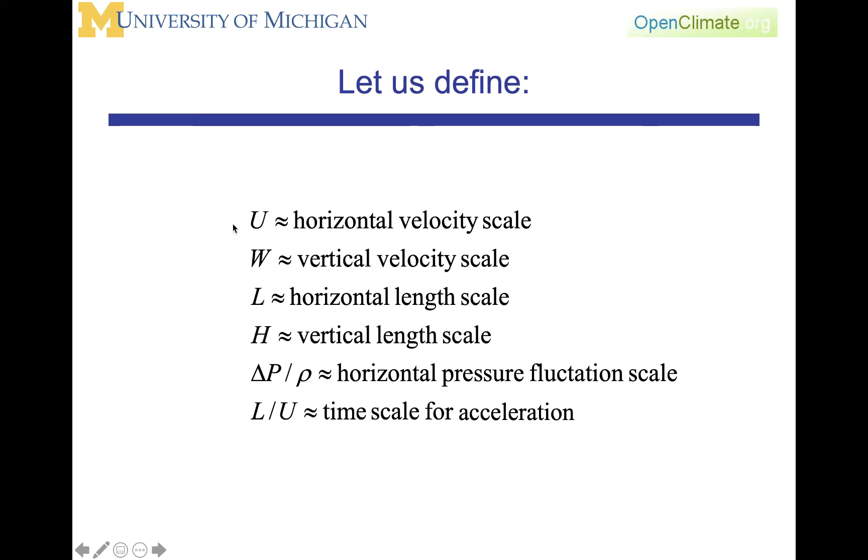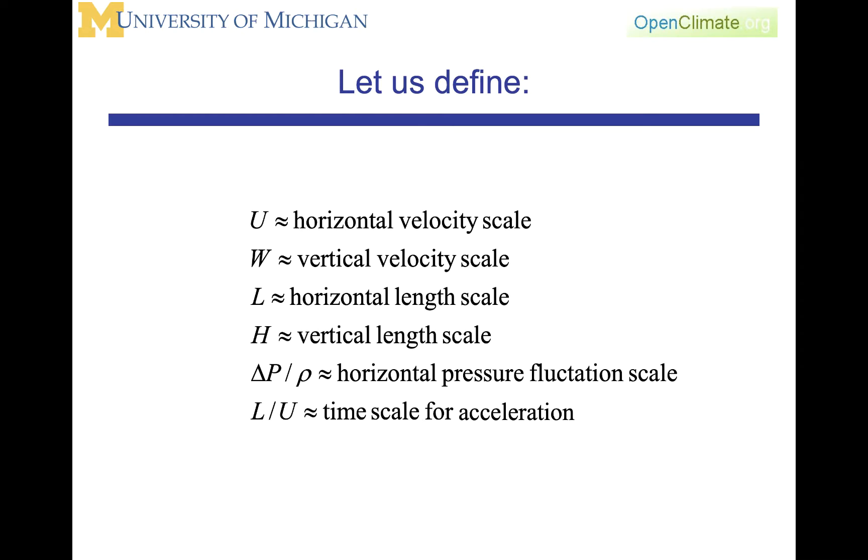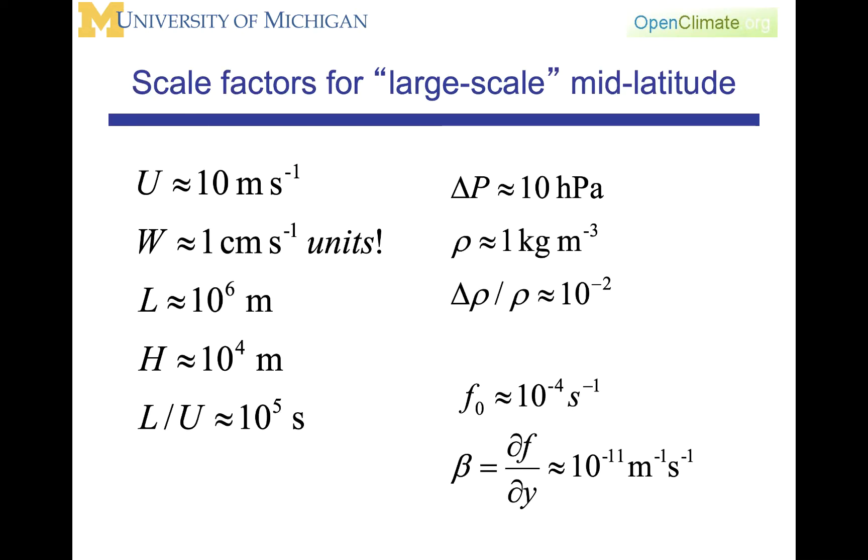In this case, you can view u and w as representative of the speed or the magnitude of the velocity. The numbers that we use in the scale analysis of the horizontal momentum equation are given here: u at 10 meters per second and w at 1 centimeter per second, L at 10^6 meters or about 1,000 kilometers, H at 10^4 meters or about 10 kilometers. Those are the scales that are going to differentiate this scale analysis from the previous scale analysis in the horizontal direction.